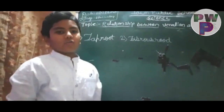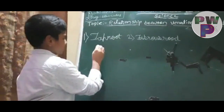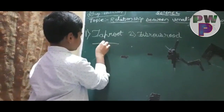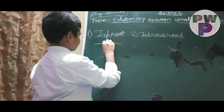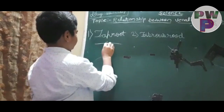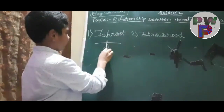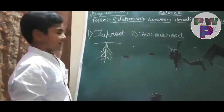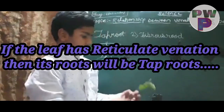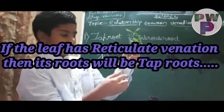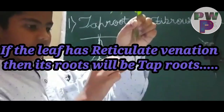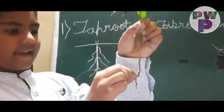For the tap root, the root will be like this. I will show you here. This is the Ashoka plant. Here the main root is there, and this is the lateral root.